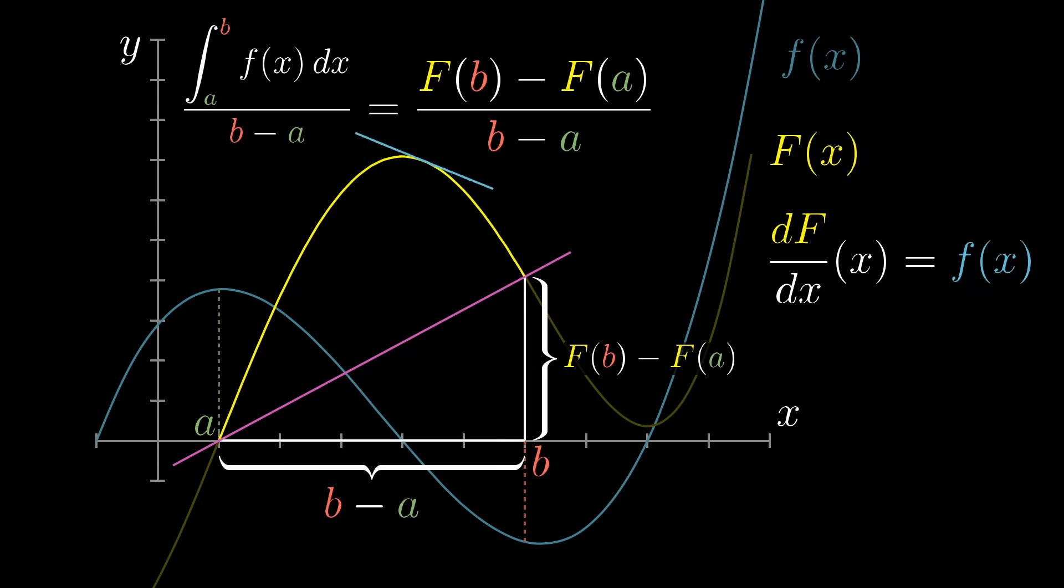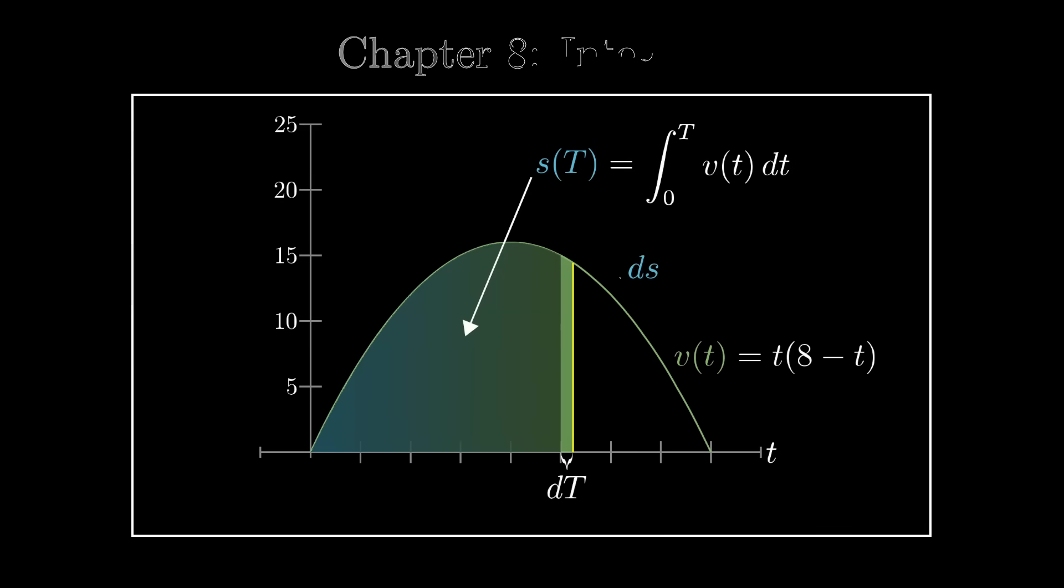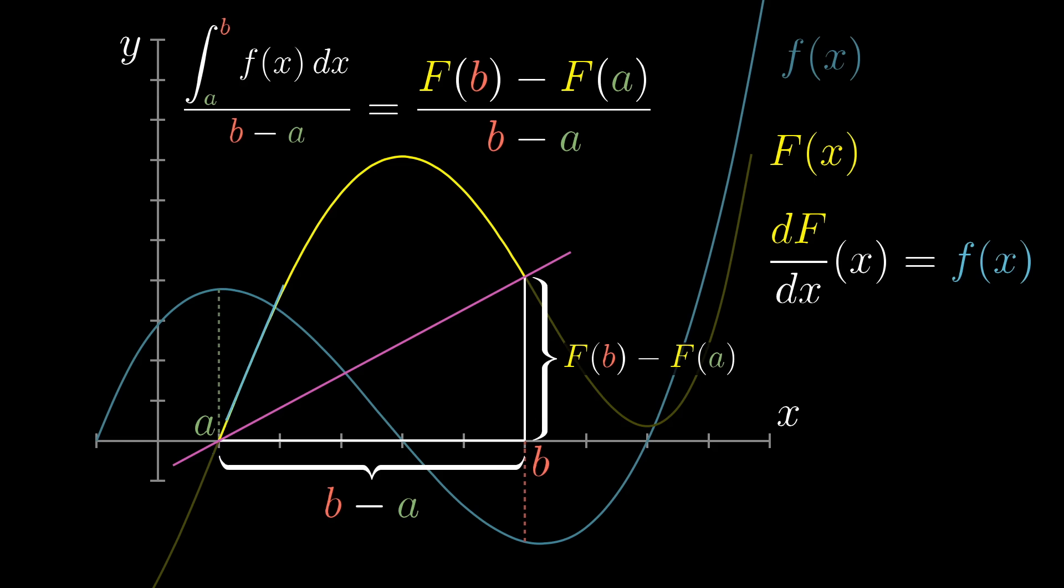So why are antiderivatives the key to solving integrals? Well, my favorite intuition is still the one I showed last video, but a second perspective is that when you reframe the question of finding an average of a continuous value as instead finding the average slope of a bunch of tangent lines, it lets you see the answer just by comparing endpoints, rather than having to actually tally up all of the points in between.